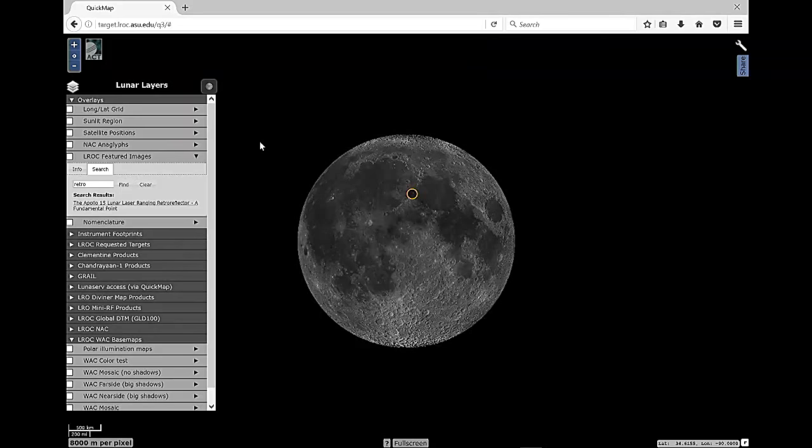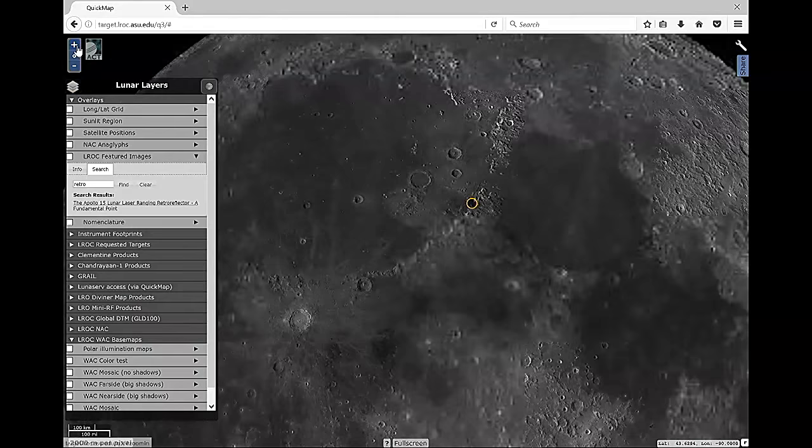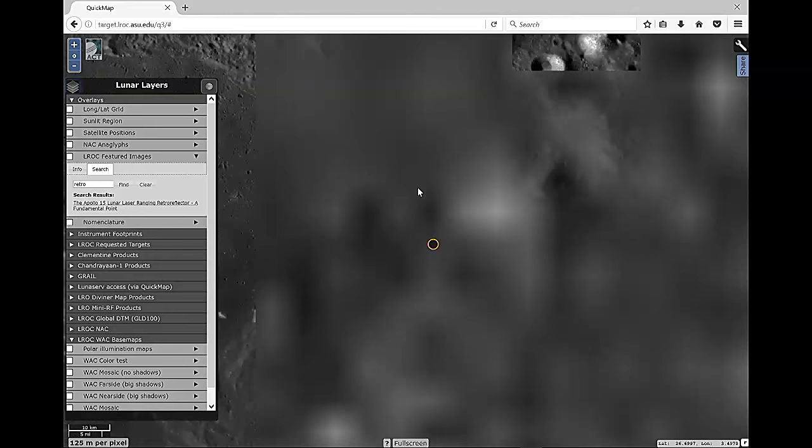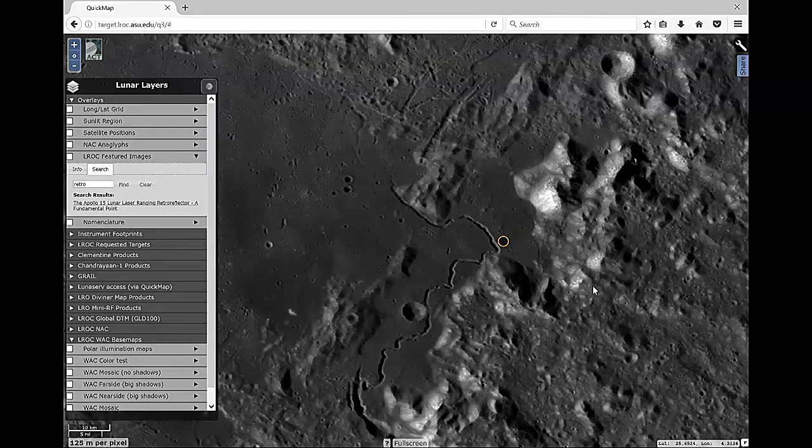So we can just simply zoom in on this and see what the astronauts left. So right now we've got about 10 kilometres across on this bar down here, 125 metres per pixel. We're looking at a space that's sort of the Melbourne metropolitan area, about 200 k's across.